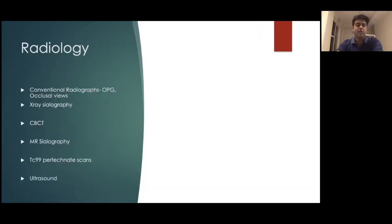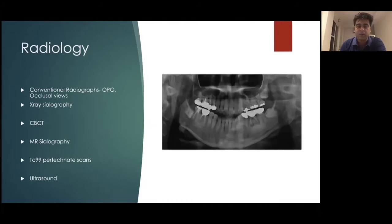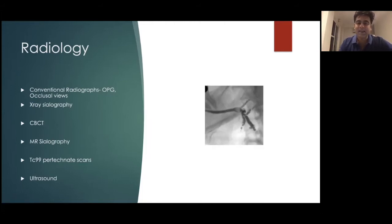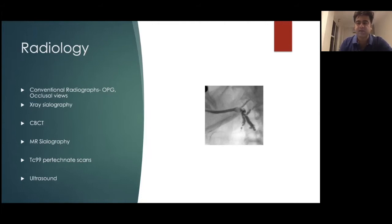When we come to radiology, we have a large number of investigations available to the sialendoscopist. It ranges from conventional radiographs — OPGs and occlusal views. You can see a stone on the left of the screen here, but smaller stones may be missed, as can stones behind the mandibular shadow or dental artifacts. X-ray sialography is slightly better and delineates the cause of obstruction quite clearly, giving good ductal spatial orientation, but the use of contrast makes it invasive and it is generally frowned upon now.